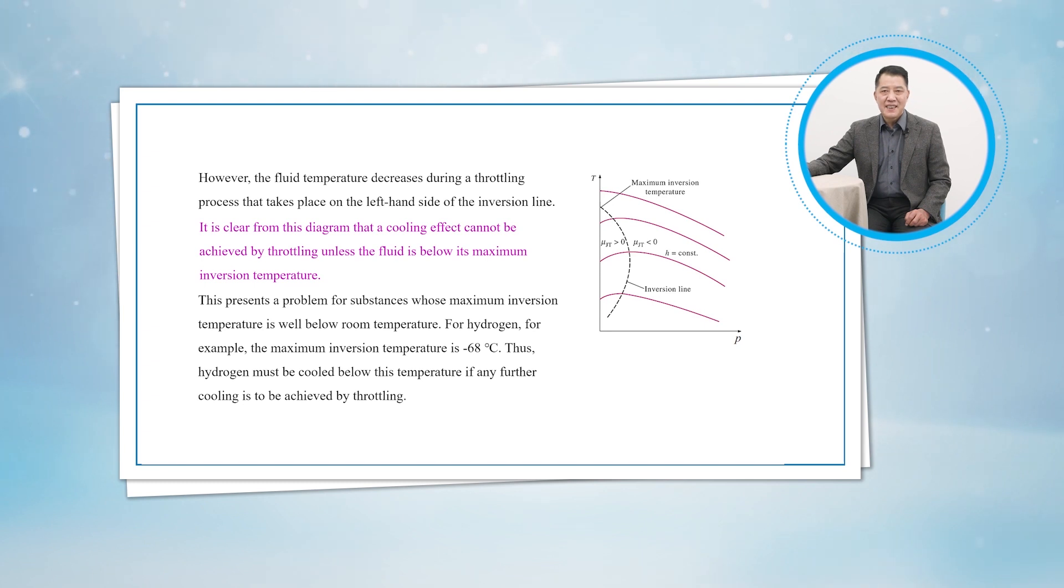This presents a problem for substances whose inversion temperature is well below room temperature. For hydrogen, for example, the maximum inversion temperature is minus 68 degrees Celsius. Thus, hydrogen must be cooled below this temperature if any further cooling is to be achieved by throttling.